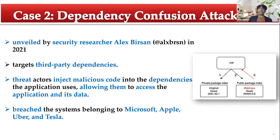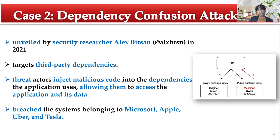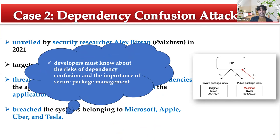The second case is the Dependency Confusion attack from 2021, unveiled by security researcher Alex Birsan. The target is third-party dependencies that developers use. If you use a private package and someone hosts a malicious package with the same dependency name, your software will depend on the malicious one. They injected malicious code into dependencies used by applications, breaking systems belonging to Microsoft, Apple, Uber, and Tesla. Developers must understand dependency confusion risks and implement secure package management.